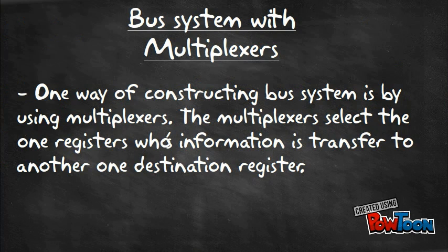Bus system with multiplexers. One way of constructing a bus system is by using multiplexers. The multiplexers select the one register whose information is transferred to another — the destination register.